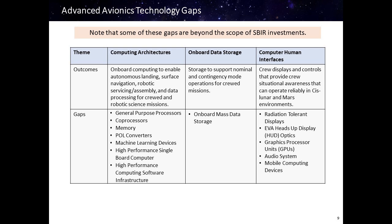To provide storage to support nominal and contingency mode operations for crewed missions, we will need advanced onboard mass data storage. For crew human interfaces, we need displays and controls that can operate and provide situational awareness for missions beyond low Earth orbit — operating reliably in cislunar and Mars environments. These include radiation tolerant displays, EVA heads-up display optics, graphics processor units, audio systems, and mobile computing devices.